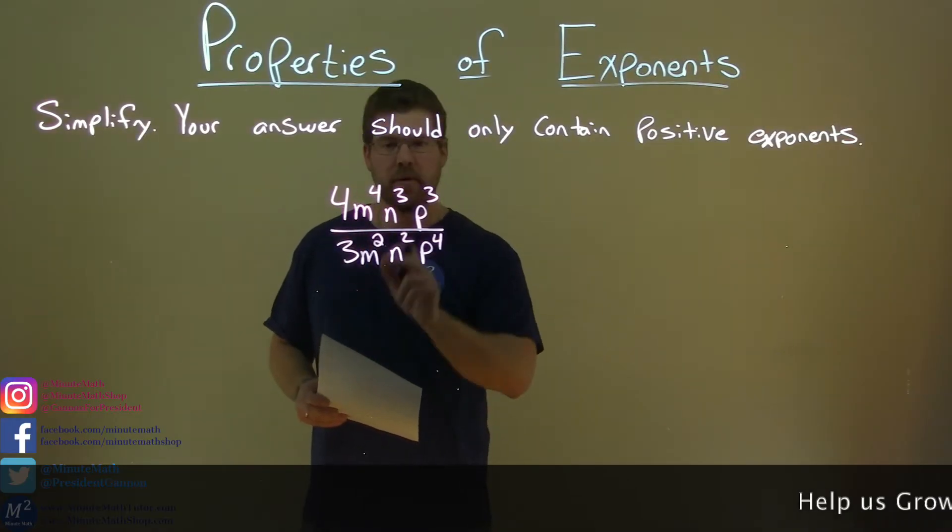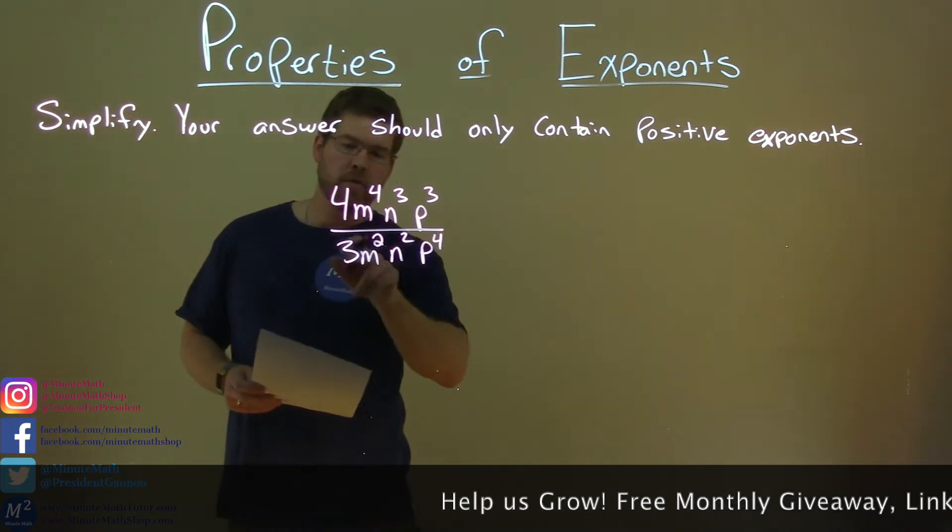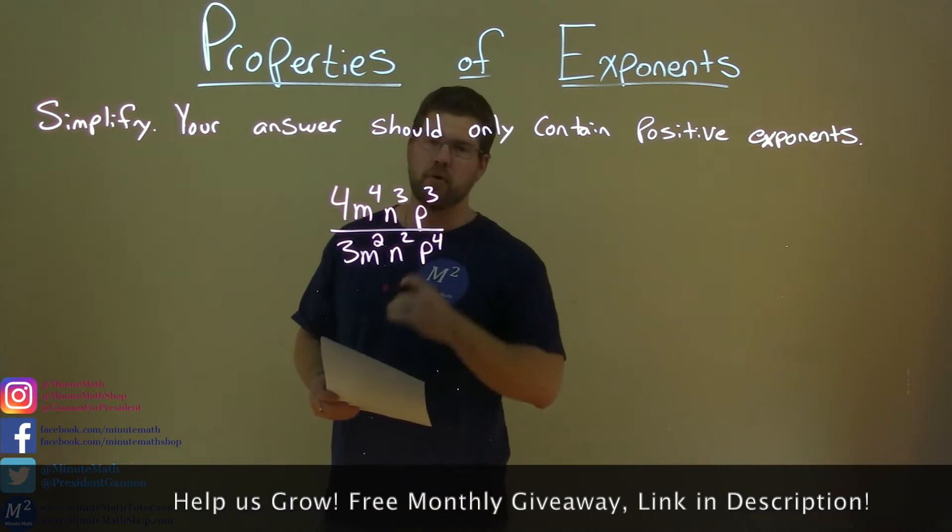4m to the 4th power, n to the 3rd power, p to the 3rd power, all over 3m squared, n squared, p to the 4th power.